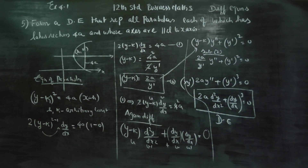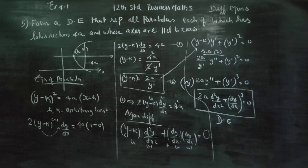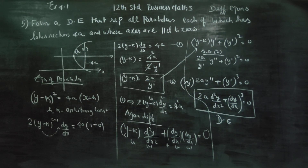Summary: h and k are the arbitrary constants. Step 1 — differentiate to get (y − k). Step 2 — differentiate again. Then substitute (y − k) to eliminate it. The final differential equation equals 0, with h and k eliminated.